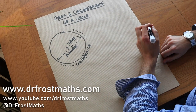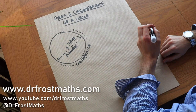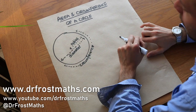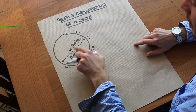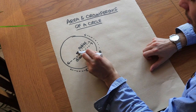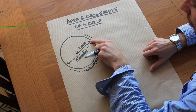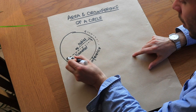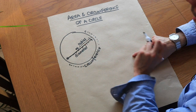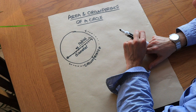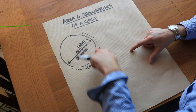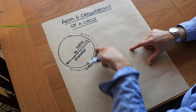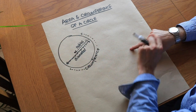Hello and welcome to this video on the area and circumference of a circle. We've got a circle here, and just to name some of the parts: the line that goes from the center of the circle to the edge is known as the radius. A line from one end of the circle to the other is known as the diameter. The edge of the circle is known as the circumference, and the length of the circumference is the perimeter of the circle.